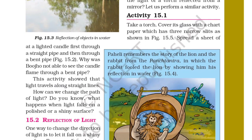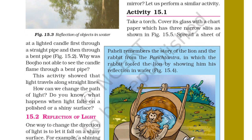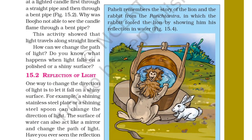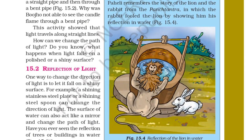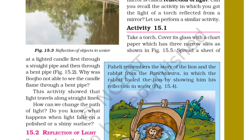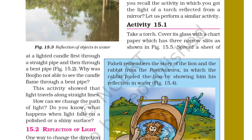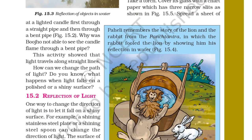Paheli remembers the story of the lion and the rabbit from the Panchatantra, in which the rabbit fooled the lion by showing him his reflection in water. In Activity 15.1, take a torch and cover its glass with a chart paper that has 3 narrow slits, as shown in figure 15.5.